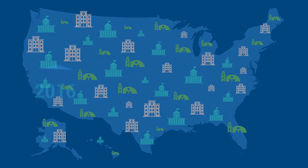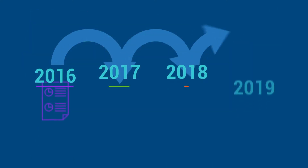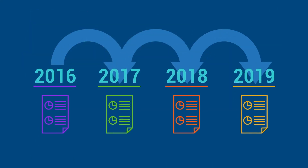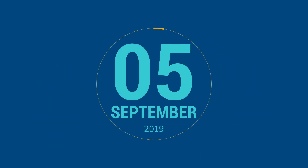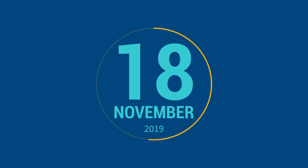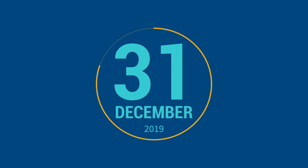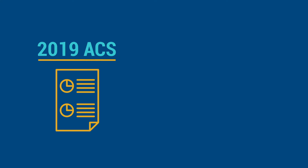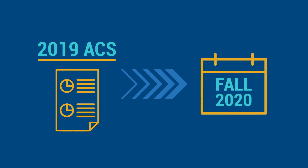Each annual release from the ACS contains data collected in the prior year, making it one of the most up-to-date resources on the U.S. population. Typically, data releases begin in September and continue through January of the next calendar year. For example, data collected in the 2019 ACS will begin to be released in Fall 2020.